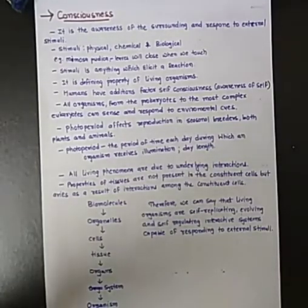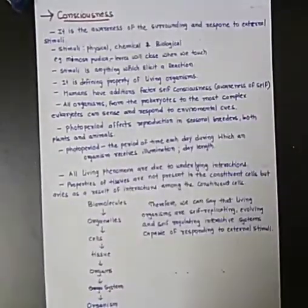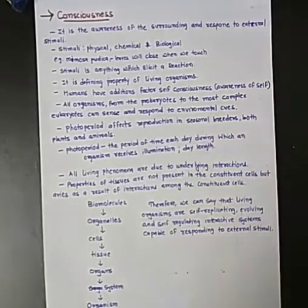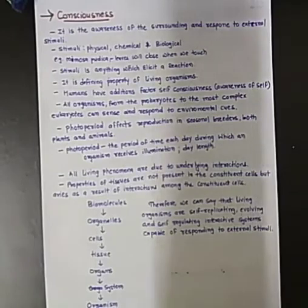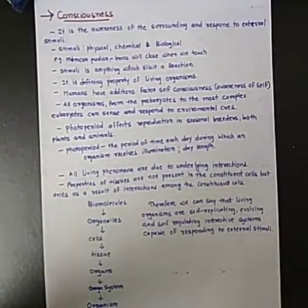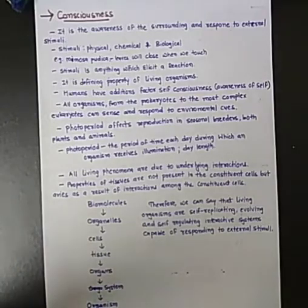Photoperiod affects reproduction in seasonal breeders, both plants and animals. Photoperiod means the period of time each day during which an organism receives illumination — that is, the day length. So photoperiod affects the reproduction of seasonal breeders.